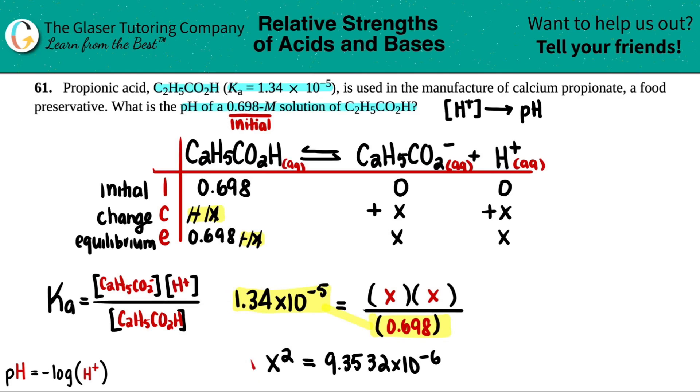We can do cross multiplication here, and then X times X is X squared. So we got X squared equals 1.34 times 10 to the negative fifth times 0.698. I'm not going to round yet because that's not the answer: 9.3532 times 10 to the negative sixth. I want to get X by itself, so I take the square root. And now I'm going to get X equals—let me round here. Looks like they gave me three sig figs, so I'll give three sig figs back: 3.06 times 10 to the negative third.